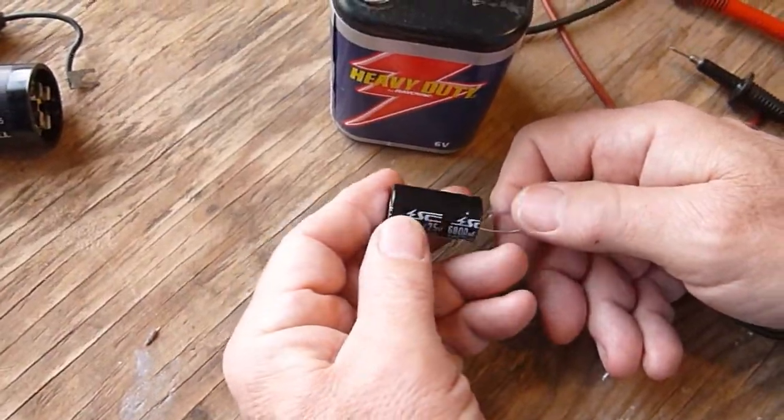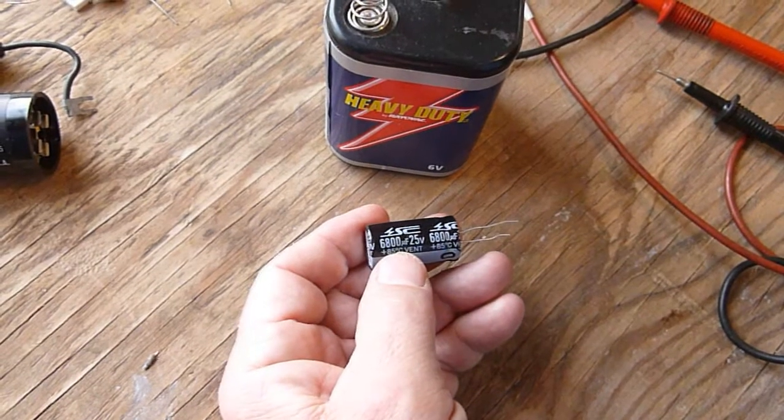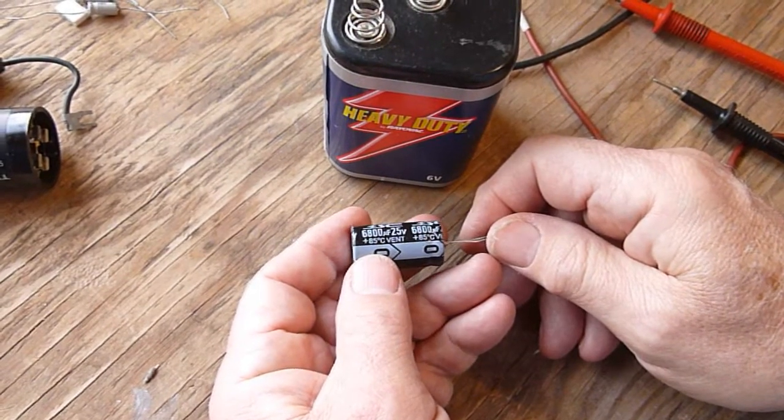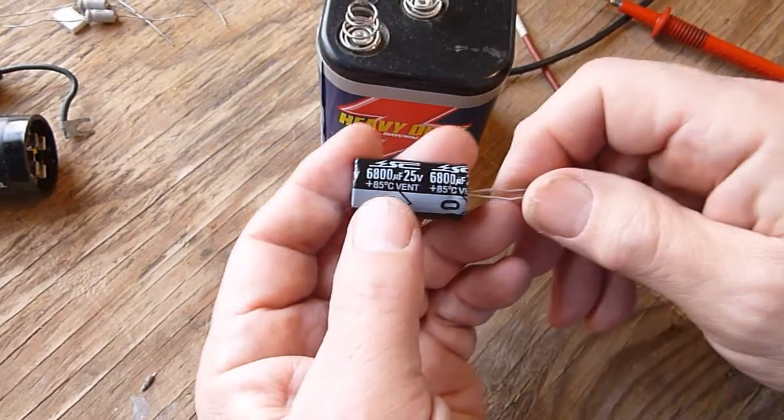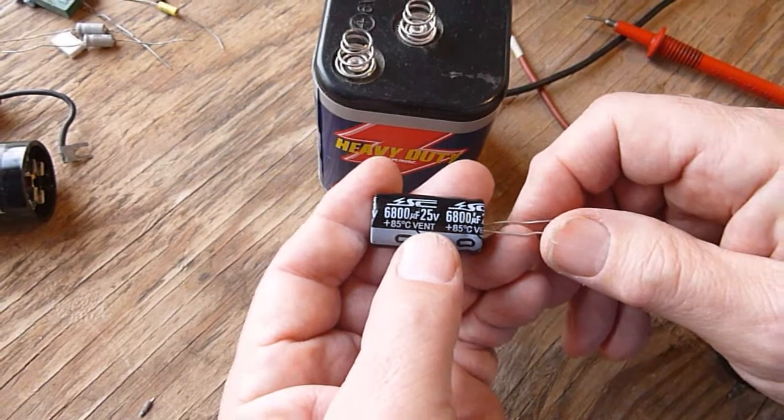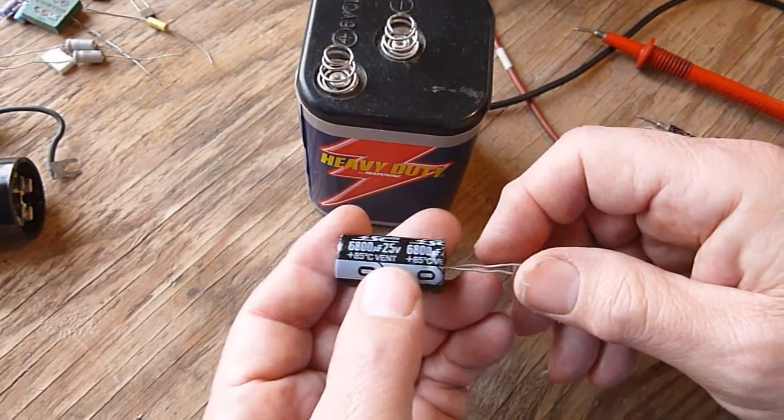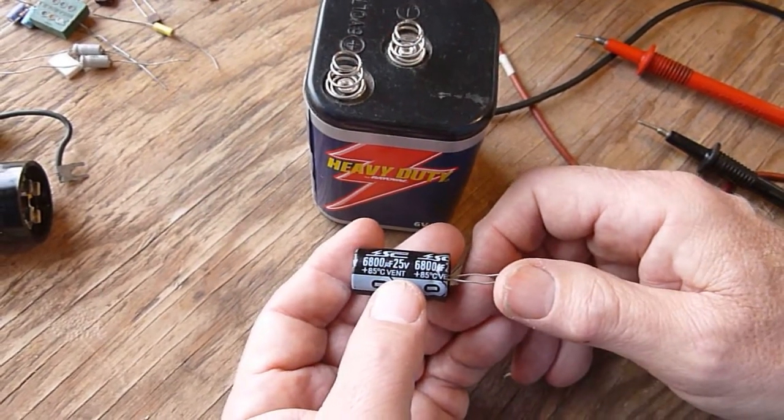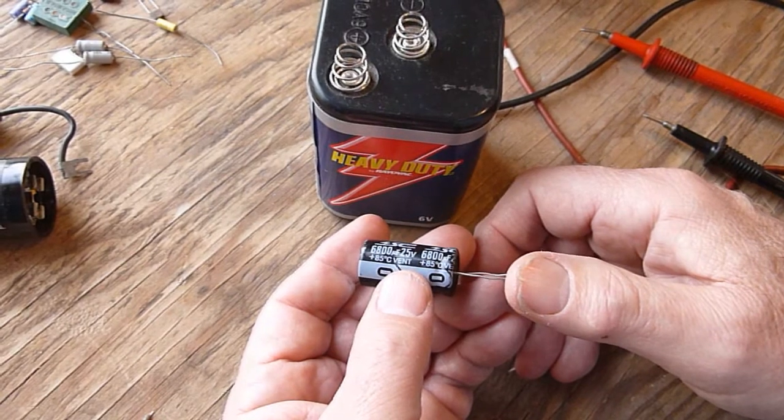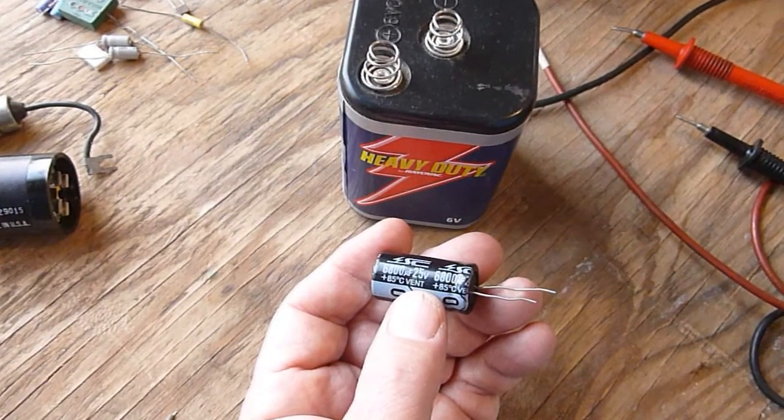This large capacitor is an electrolytic capacitor, since one plate is composed of a conducting liquid called an electrolyte. Even though this capacitor is large in size, it is not a super capacitor. This one here is marked 6800 microfarads, which means its capacitance is just under seven thousandths of a farad. Another way of saying the same thing is that you would need nearly 150 of these capacitors placed in parallel to hold as much charge per volt as the super capacitor that we showed in the solar powered flashlight.